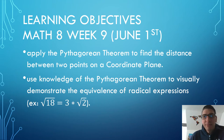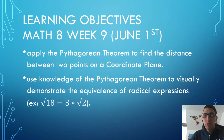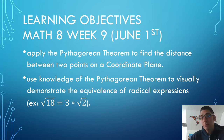Today's lesson will cover these objectives, which are the same as week 9 of the Math8 BCPS remote learning packet, the week of June 1st. Students will apply the Pythagorean theorem to find the distance between two points on a coordinate plane, and use knowledge of the Pythagorean theorem to visually demonstrate the equivalence of radical expressions — for example, the square root of 18 is actually equivalent to 3 times the square root of 2.